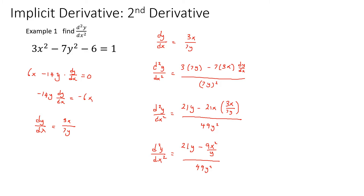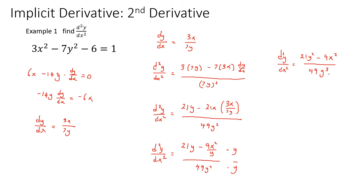To simplify this fraction within a fraction, we multiply the entire expression by y over y to eliminate the inner denominator. This gives us 21y squared minus 9x squared, all over 49y cubed. This is the most simplified version, so the answer is 21y squared minus 9x squared over 49y cubed.